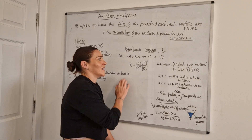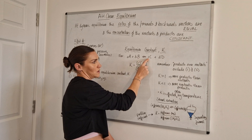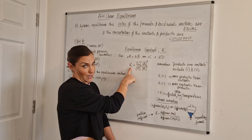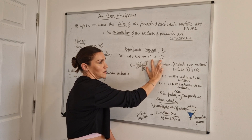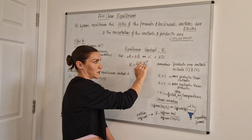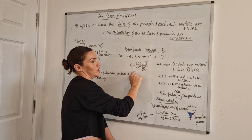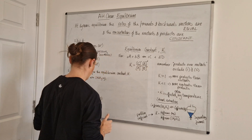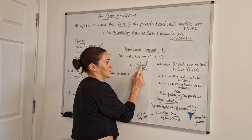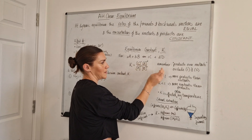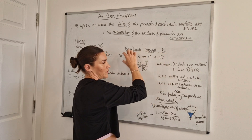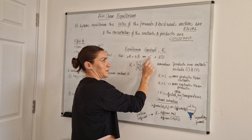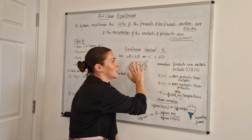For a general reaction: A moles of A plus B moles of B giving C moles of C plus D moles of D, the equilibrium constant expression is: K equals the concentration of the products raised to their molar indices, over the concentration of the reactants raised to their molar indices — so the number of moles becomes a power. Key things to remember: it's always products over reactants, and don't forget to include the number of moles as a power for each substance.